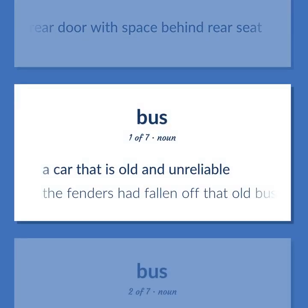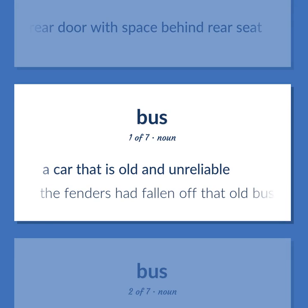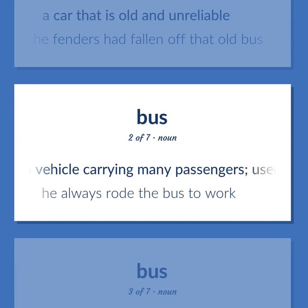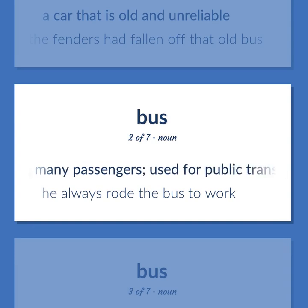JALOPY: A car that is old and unreliable. Example: The fenders had fallen off that old bus. BUS: A vehicle carrying many passengers, used for public transport. Example: He always rode the bus to work.